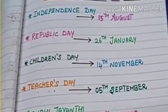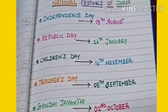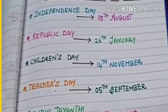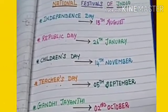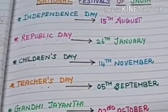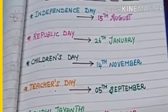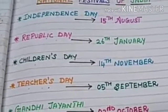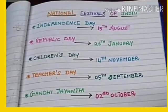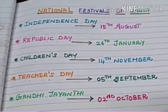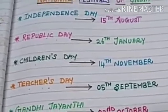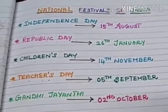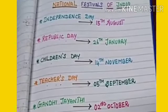These are our famous national festivals. Number one, Independence Day on 15th of August. Second, Republic Day, celebrated on 26th of January. Third, Children's Day on 14th of November. Fourth, Teacher's Day, celebrated on 5th of September. Fifth, Gandhi Jayanti on 2nd of October.